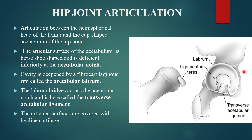The articular surfaces are covered by hyaline cartilage. The hip joint is articulated between the hemispherical head of the femur and the horseshoe-shaped articular surface of the acetabulum, deepened by the acetabular labrum. Where the labrum is deficient at the acetabular notch, that notch is bridged by the transverse acetabular ligament.